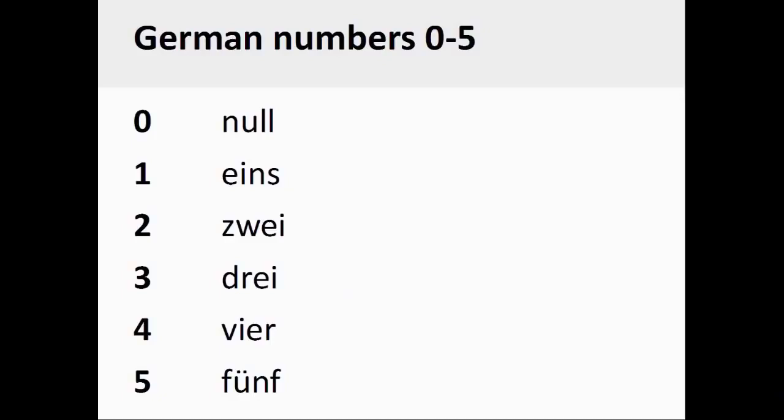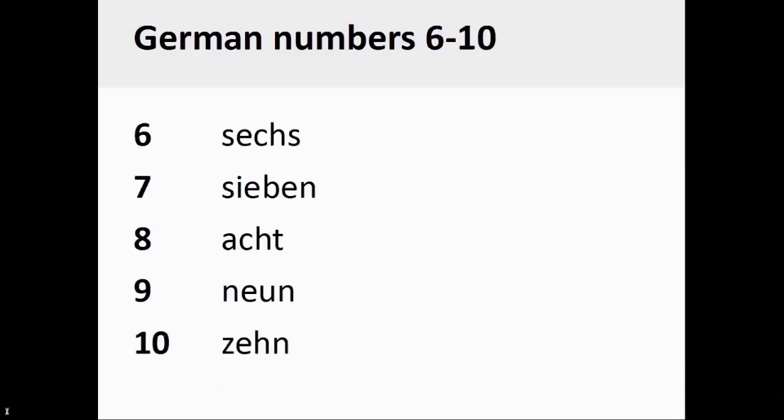The German numbers 0 through 5 are pronounced null, eins, zwei, drei, vier, fünf. The German numbers 6 through 10 are pronounced sechs, sieben, acht, neun, zehn. You will note that the numbers 0 through 10 are formed in a manner that is very similar to English.